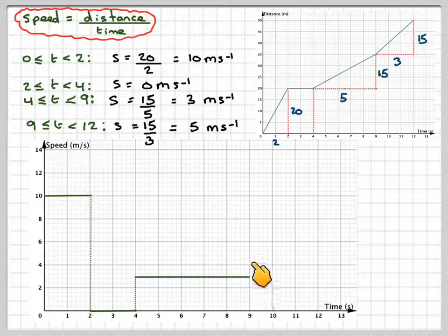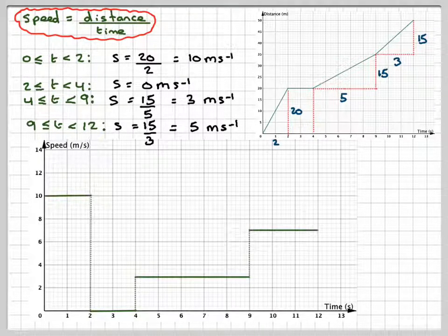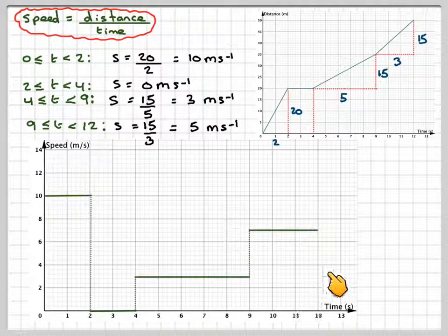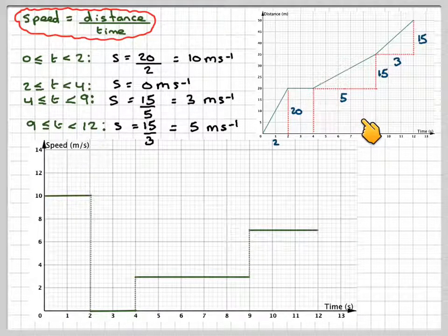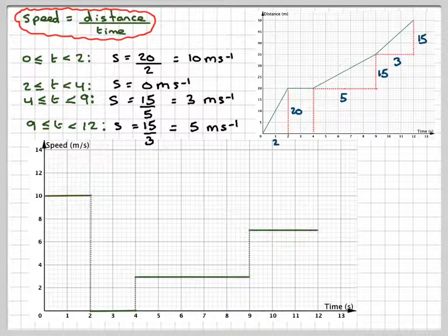Here we will find 5 meters per second and draw in a line. This is the resulting speed-time graph from the distance-time graph. I hope you've understood, and thank you very much for watching.